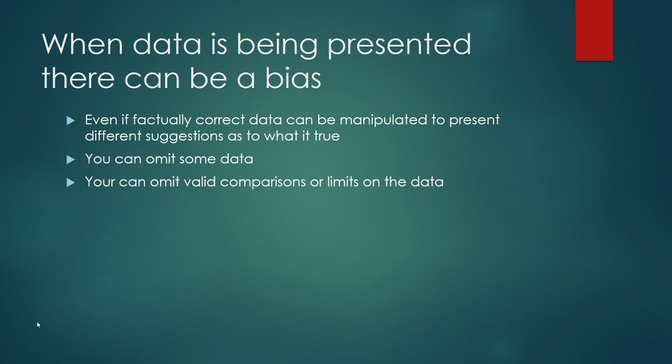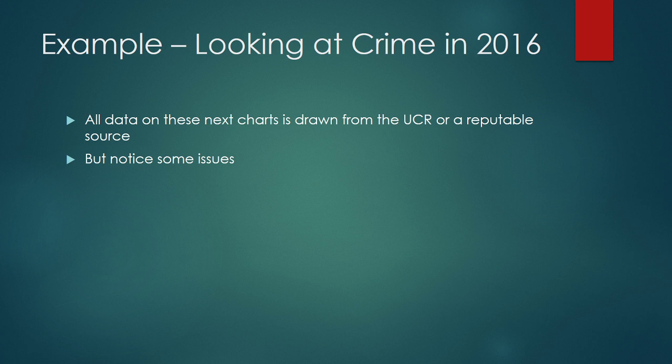You also have to be aware that when data is being presented, there can be a bias in the actual presentation. The underlying data can be accurate and true, but even factually correct data can be manipulated to present something different. One way this happens is by not providing all the data, or omitting comparisons or limits of the data.